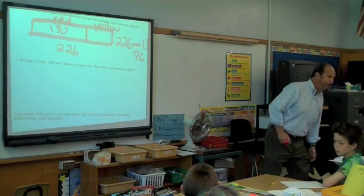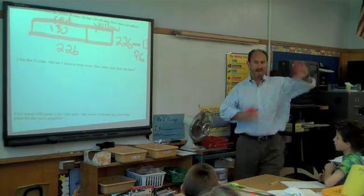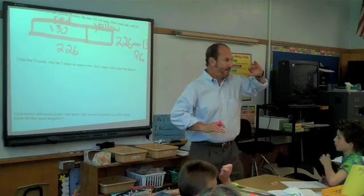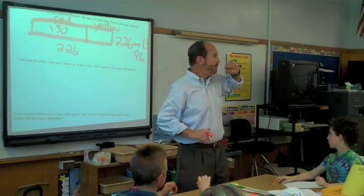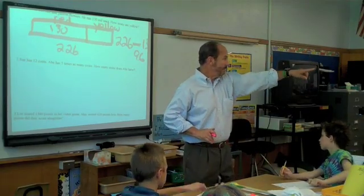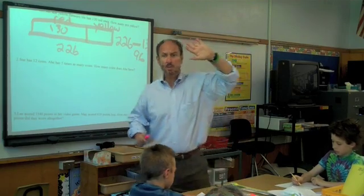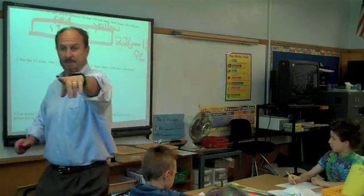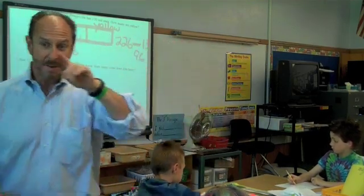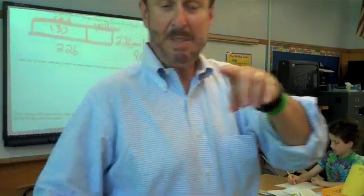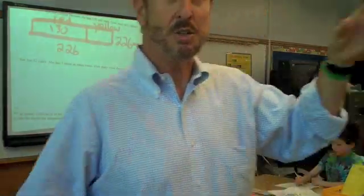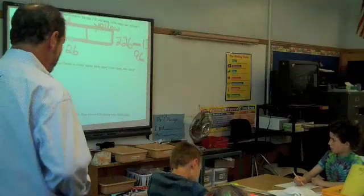How many bars do we need now? How many people do we have here? Two. Who are the two people? Yes — Abe and Sue. Let's draw two bars.